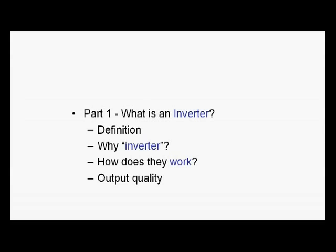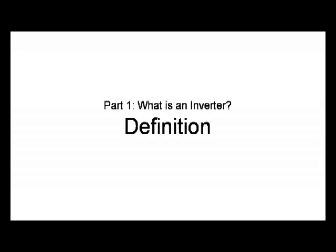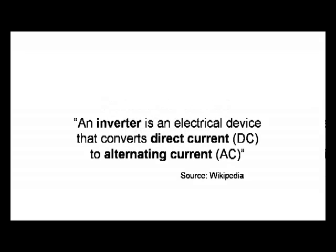In this section I'm going to be looking at a definition, why the term inverter, how does an inverter work, and we're going to finish off by looking at the output quality of an inverter. So let's get going. An inverter is an electrical device that converts direct current, DC, to alternating current, AC. Simple as that.